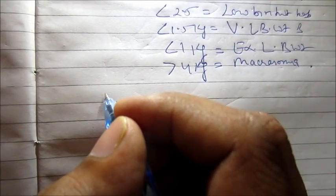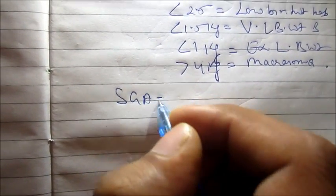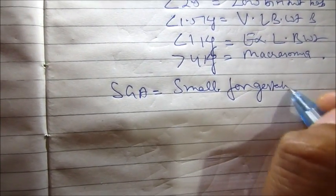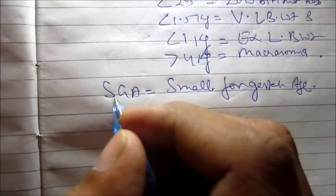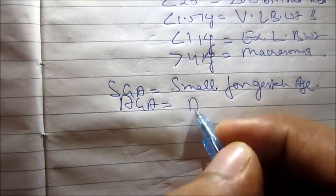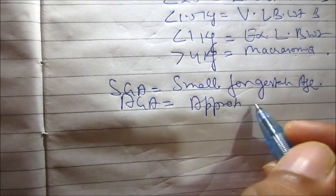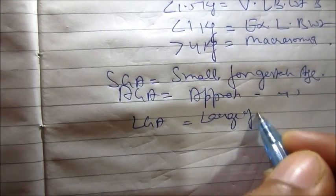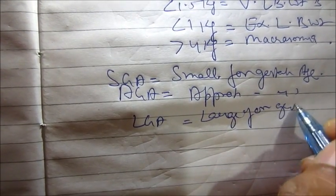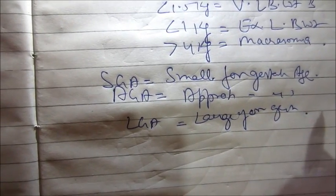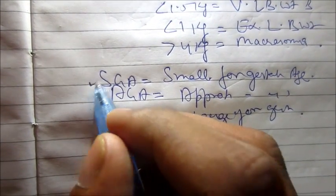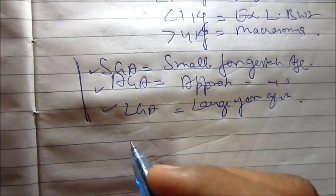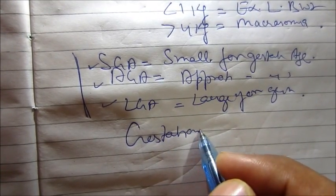If the child is having a weight greater than 4 kg, this condition is known as macrosomia. Now, three important terms: SGA means small for gestational age, AGA means appropriate for that particular gestational age, and LGA is large for gestational age.